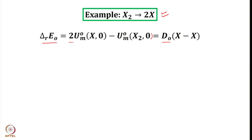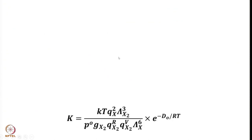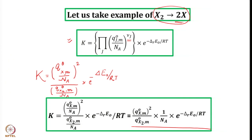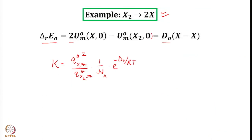Going back to the expression, it was: K equals q_X^m naught squared divided by q_X₂^m naught, times (1/N_A), times exponential(minus D₀ / RT). This delta_r E naught equals D₀, so we have this expression. The numerator is for X, which is an atom, and the denominator is for X₂, which is a molecule.